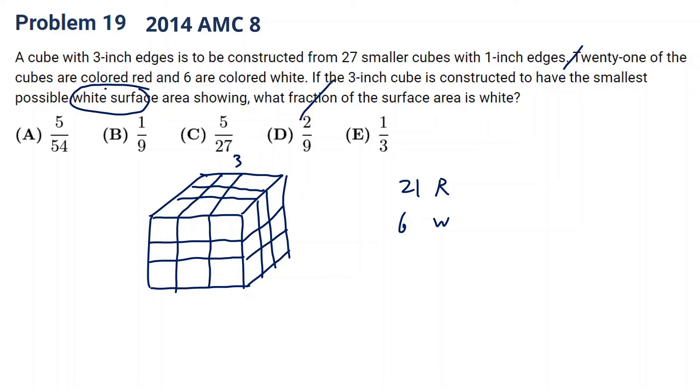A fraction. The surface area in total is 3 times 3 times 6. That is 54. That will be our denominator. And the numerator will be the smallest possible white surface area.